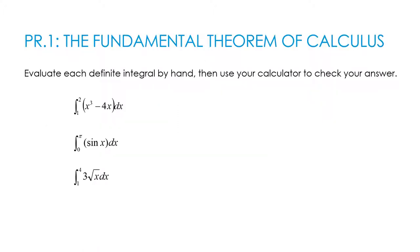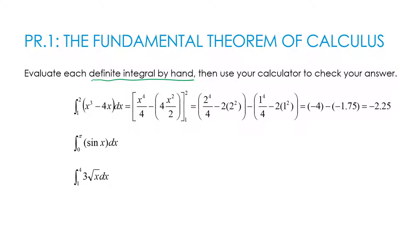So here are three definite integrals for you to try. I want you to first do them by hand because you need the practice. Then you can certainly use your calculator to check your answer. My first guy, I've got x³ - 4x. I found the antiderivative to be x⁴/4 - 4 times x²/2, which I could have reduced to just be 2x². Then I'm plugging in 2 and plugging in 1, subtracting those two quantities to get -2.25. Again, feel free to check with your calculator.